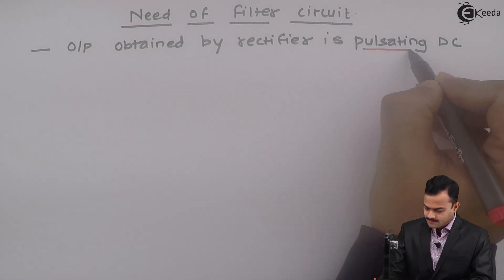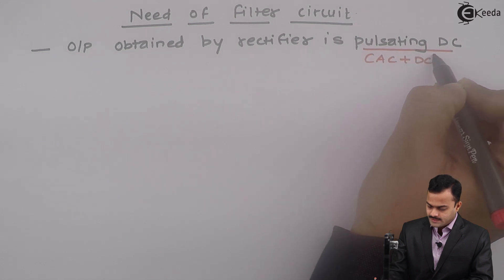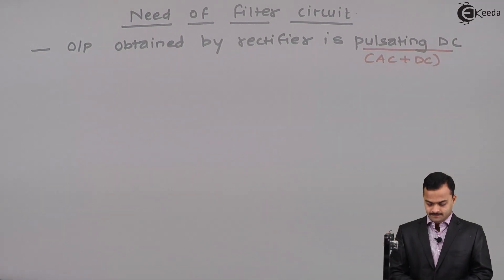Pulsating DC means it has some AC component with DC output voltage. The AC component present in DC output voltage or output voltage of a rectifier is called as Ripple.